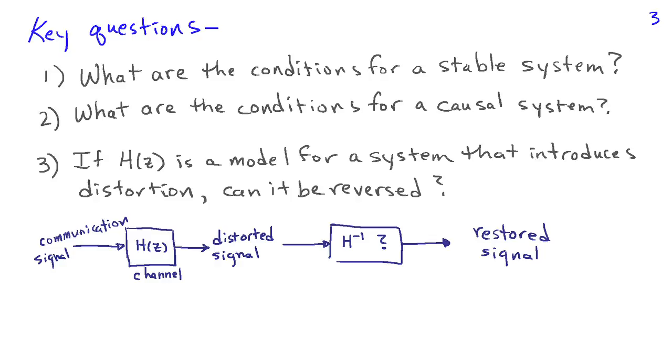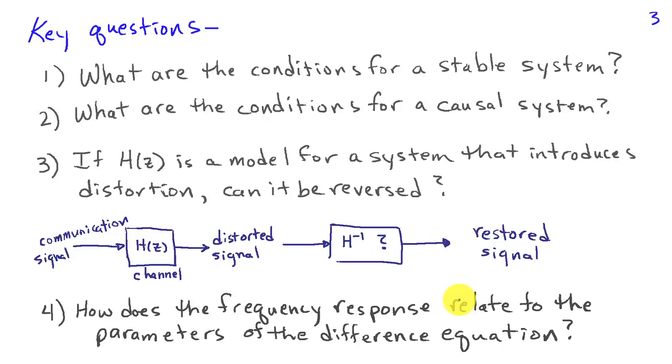And then finally, we'll see how the frequency response relates to the parameters of the difference equation. We already know that the discrete time Fourier transform, which would give us the frequency response, is just the z transform evaluated on the unit circle. And that's going to play a key role in relating the frequency response of the system to the parameters of the difference equation.